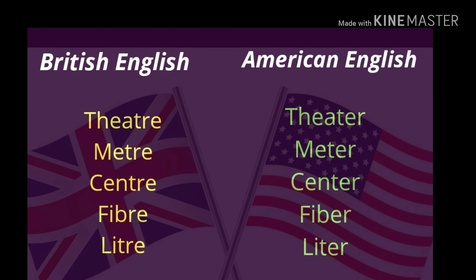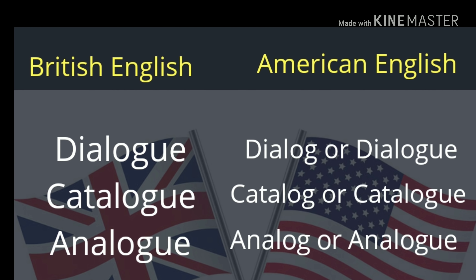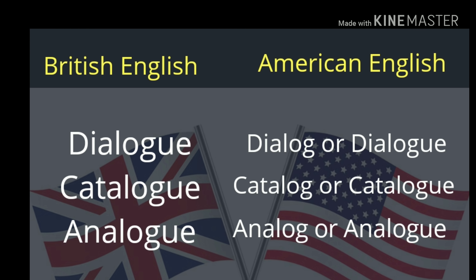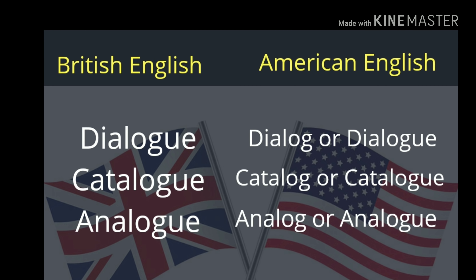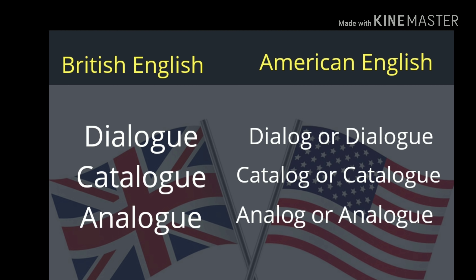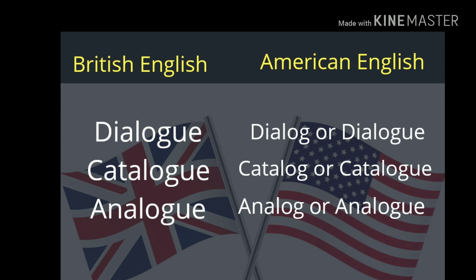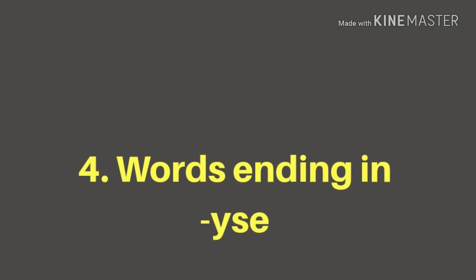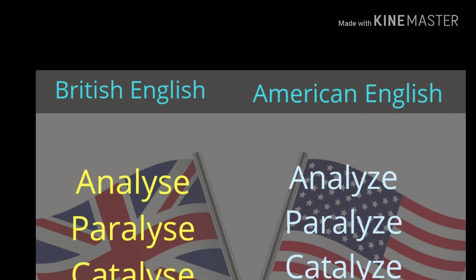The third category is words ending in G-U-E. In British English we use G-U-E, while in American English both forms can be used, but mostly Americans use it without U-E. Words to remember include: dialogue, catalogue, and analogue — these should be spelled with U-E according to British English.